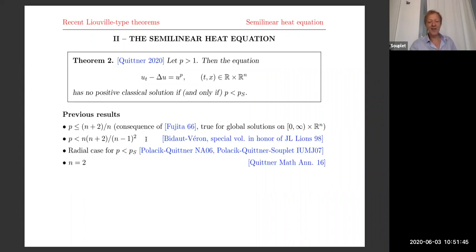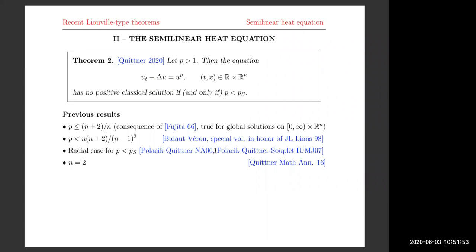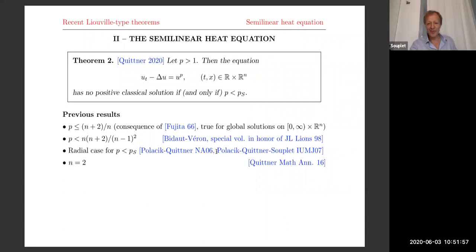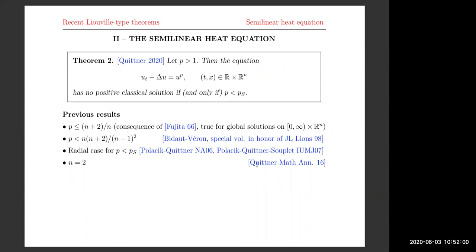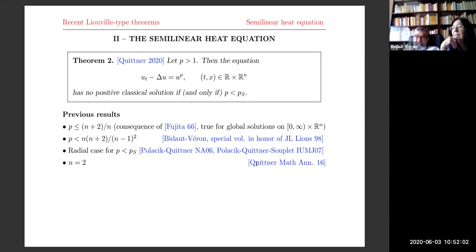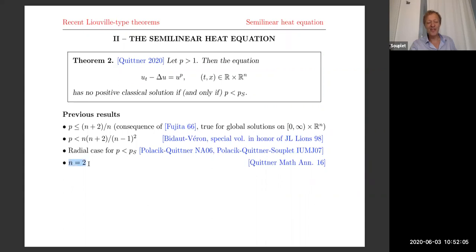The radial case up to the optimal exponent was settled in two papers by Poláčik and Quittner for bounded solutions, and by Poláčik, Quittner, and myself one year later for general solutions in the radial case. Recently, Quittner made an improvement for n equals two without any radial assumption — his argument is the first step of the now complete result. And for the half-space case, we were able to settle it for bounded solutions earlier than the whole space case, in a joint paper with Peter Poláčik and Pavel Quittner, showing nonexistence for bounded solutions in R × R^n_+.